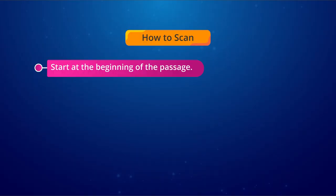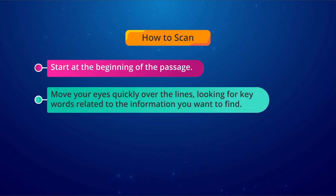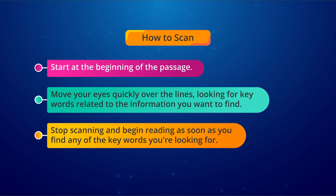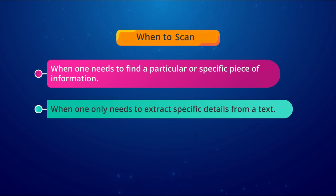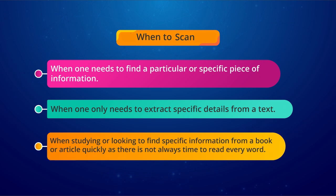How do we scan? Start at the beginning of the passage, then move your eyes quickly over the lines looking for keywords related to the information you want. Stop scanning and begin reading as soon as you find any of the keywords you are looking for. We use scanning when we need to find a specific piece of information, extract specific details from a text, or find information from a book or article quickly when there is not time to read every word — for example, checking eligibility, deadline, fee, or exam center in an advertisement.